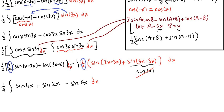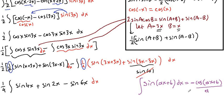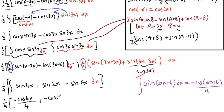Now we know how to integrate the sine function. The integral of sine of ax plus b dx equals negative cosine of ax plus b divided by the derivative of the angle, which is a. Applying this: the integral of sine 4x gives negative cosine 4x over 4, plus the integral of sine 2x gives negative cosine 2x over 2, minus the integral of sine 6x gives negative cosine 6x over 6.